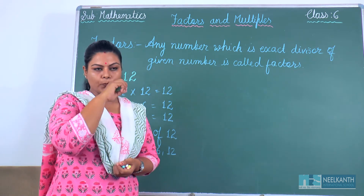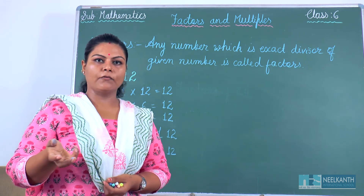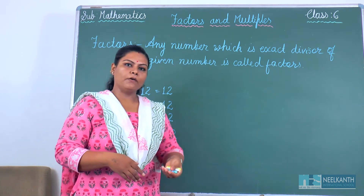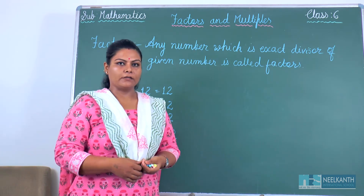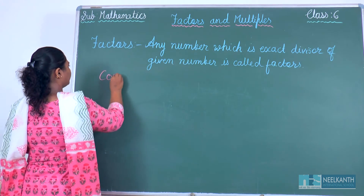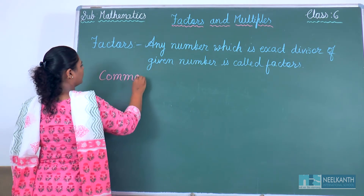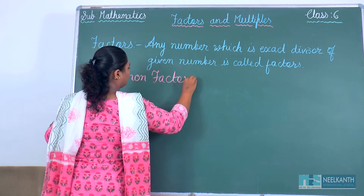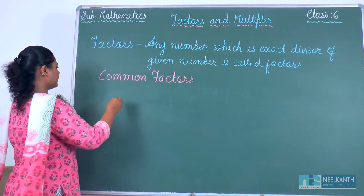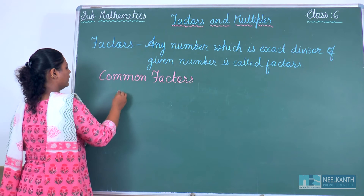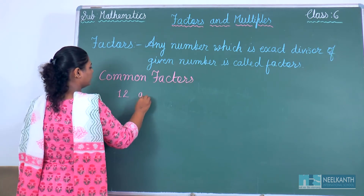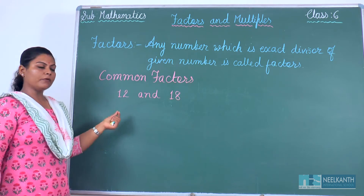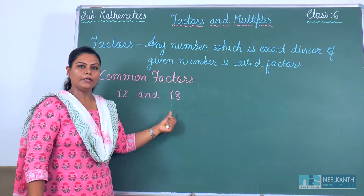Now we will move towards the common factors of two numbers or three numbers. Let's see some examples of common factors. Suppose the question is to find the common factors between 12 and 18.